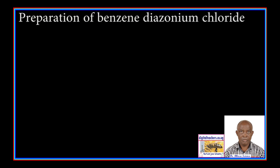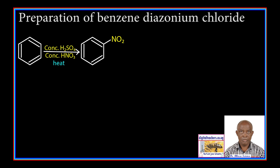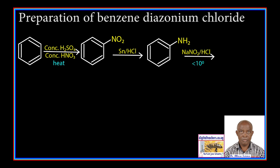Preparation of benzene diazonium chloride: Benzene is reacted with a hot mixture of concentrated nitric acid and concentrated sulfuric acid to form nitrobenzene. Nitrobenzene is reduced by tin in the presence of hydrochloric acid to aminobenzene. Aminobenzene reacts with cold sodium nitrite in the presence of hydrochloric acid to form benzene diazonium chloride.